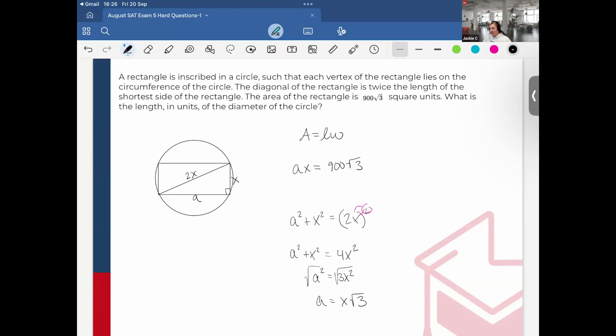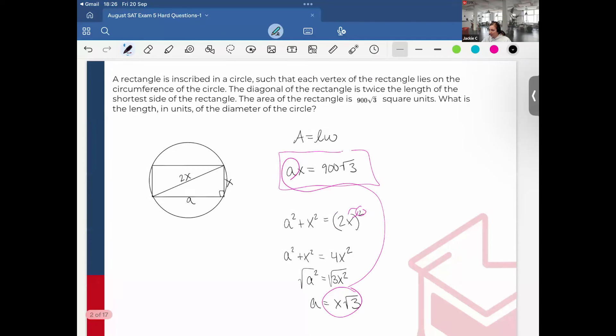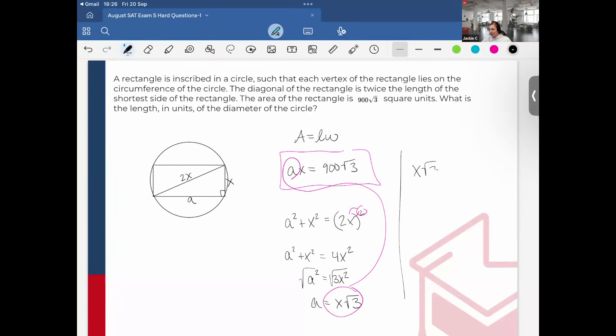Careful here, you want to be sure to distribute the exponent to both the 2 and the x. So that gives me a squared plus x squared equals 4x squared. A squared equals 3x squared. Take the square root so a equals x root 3. Now that I know what a is equal to, I can substitute this in for the a. That would be x root 3 times x equals 900 root 3, so x squared root 3 equals 900 root 3.